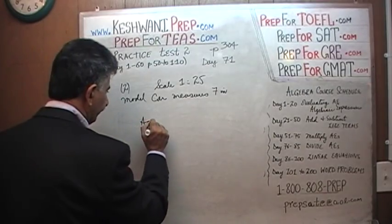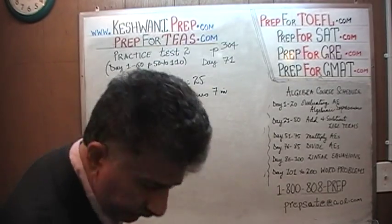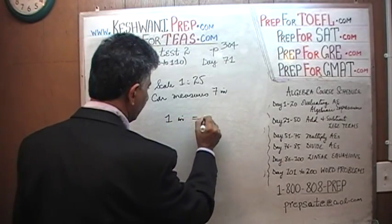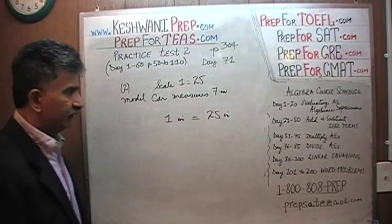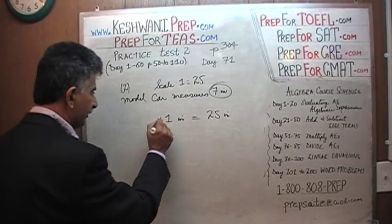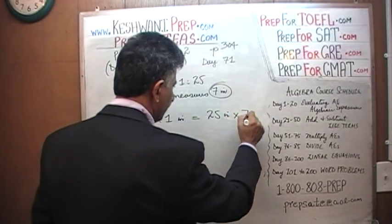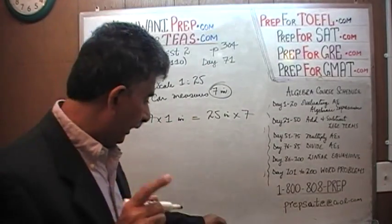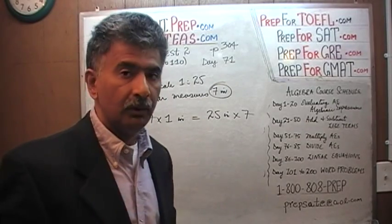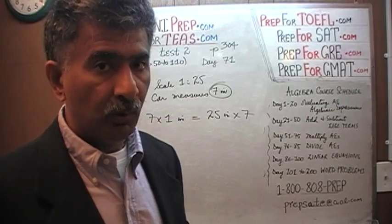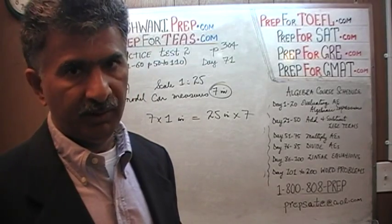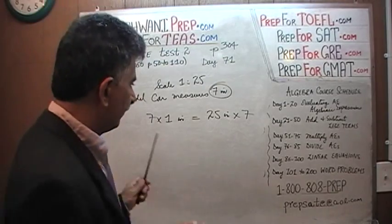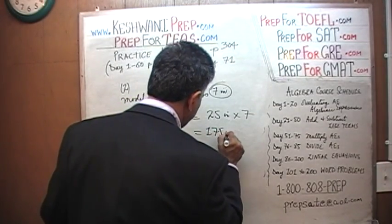The actual length: we know 1 inch equals 25 inches in reality. Since the model is 7 inches long, therefore 7 inches is going to be 7 times as much. How much is 25 times 7? I know 25 times 4 is 100, and 200 is made up of 8 twenty-fives. Therefore 7 twenty-fives must be 125 less than 200, which is 175. So 175 inches is the answer — a model car that measures only 7 inches, in reality the full-blown version is actually 175 inches long.